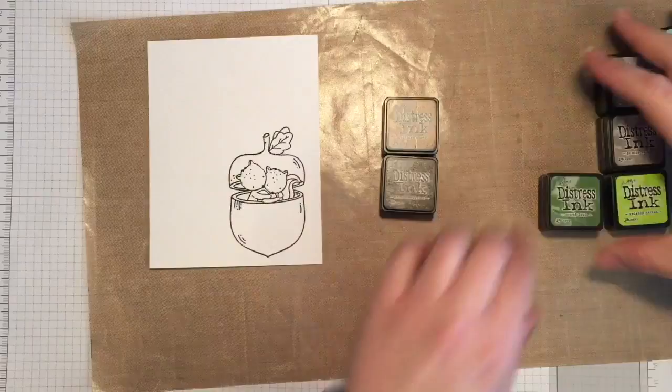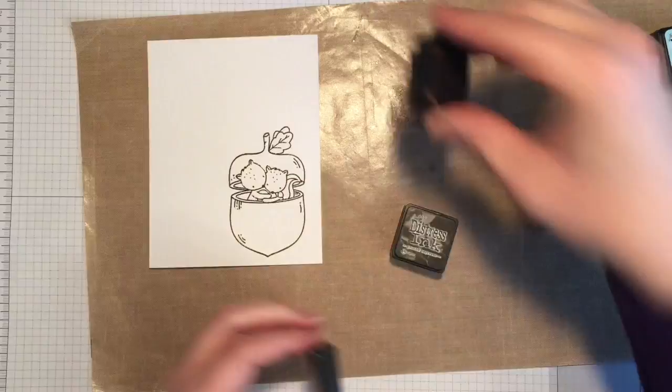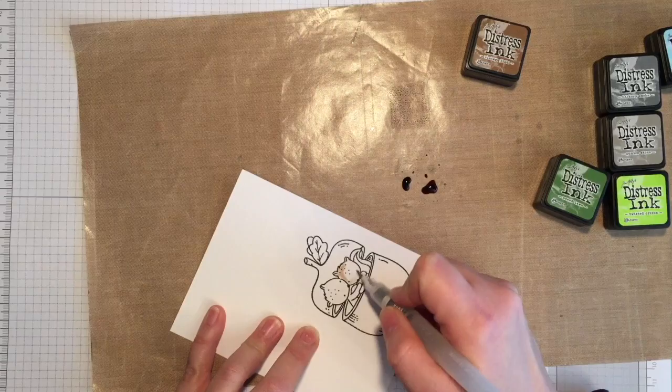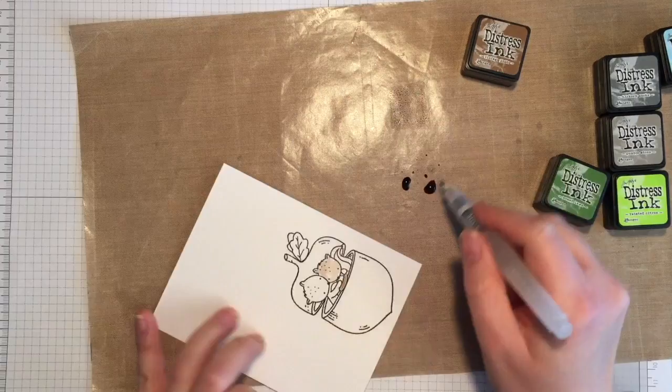So I'm going to be using a few colors of Distress Ink today. The brown colors I'm using first are ground espresso and vintage photo. I'm going to be coloring in one of the squirrels as well as the acorn with those two colors. So I started with the squirrel and now I'm doing the cap of the acorn with the vintage photo.